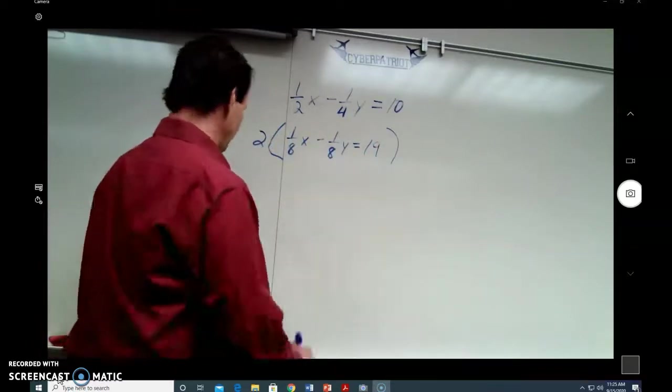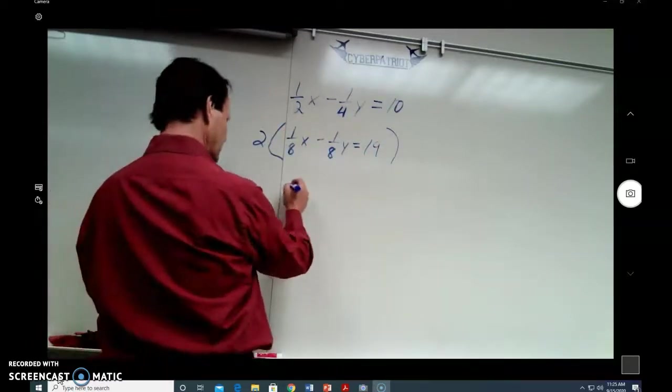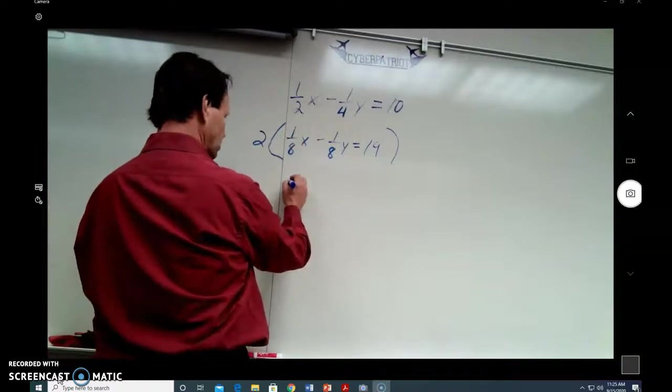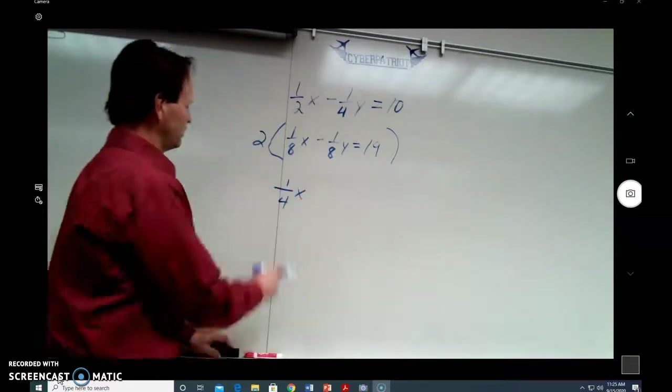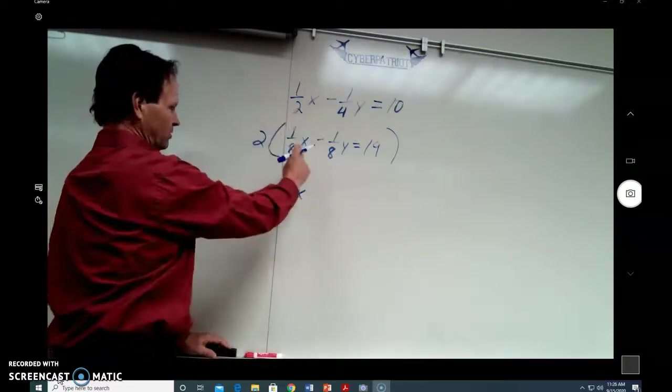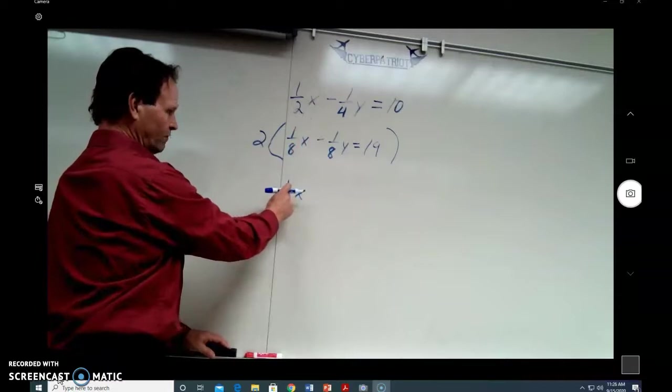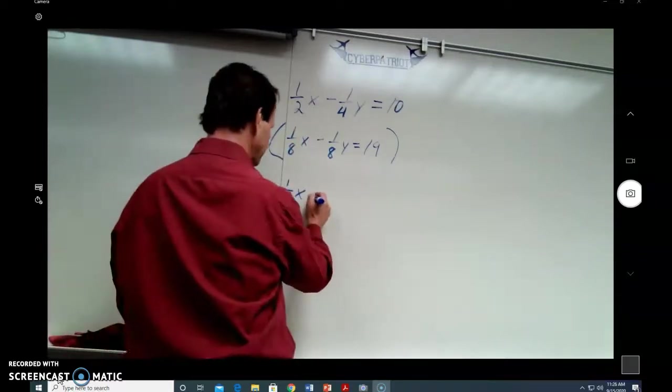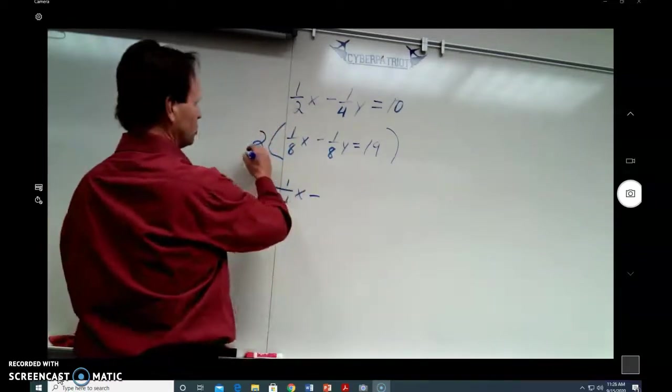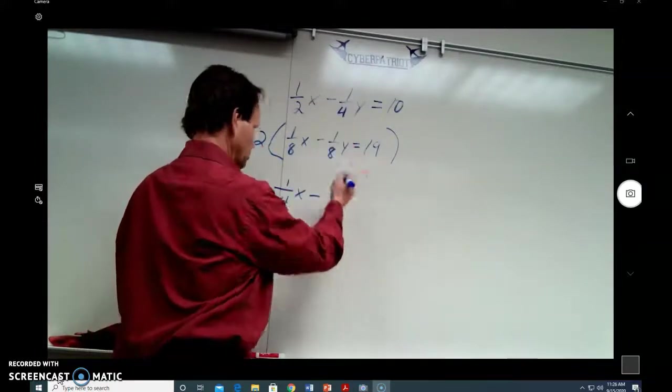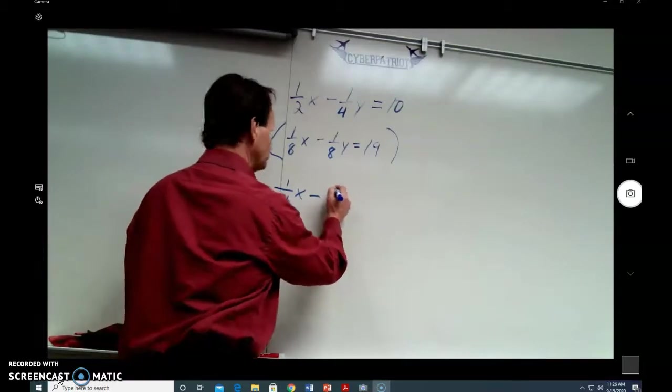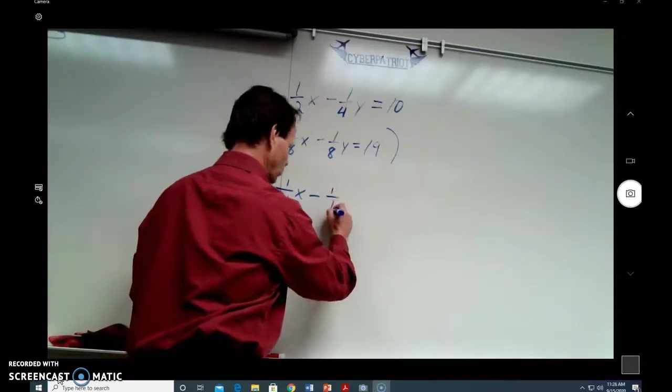Well, if I do that, 2 times 1 eighth is 2 eighths, and I'm just going to immediately reduce that 2 eighths to 1 fourth x. 2 times 1 eighth is 2 eighths, which can be reduced to 1 fourth. So, 1 fourth x minus 2 times negative 1 eighths, 2 times 1 eighths, again, is 2 eighths, and I'm going to reduce to 1 fourth y.